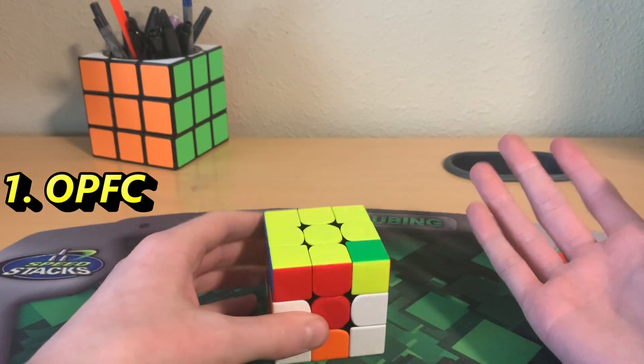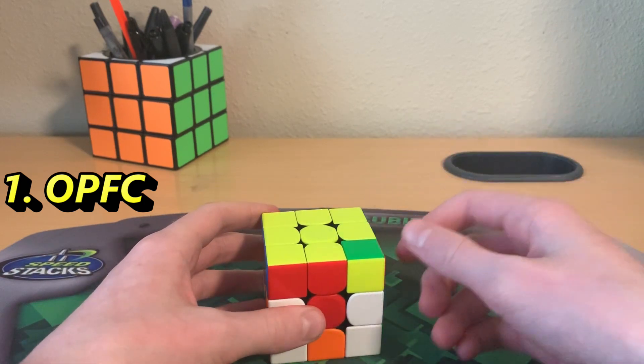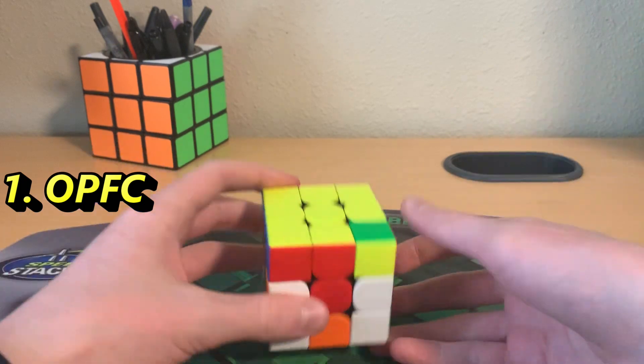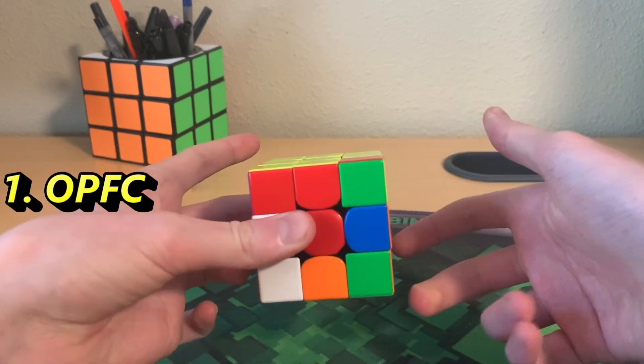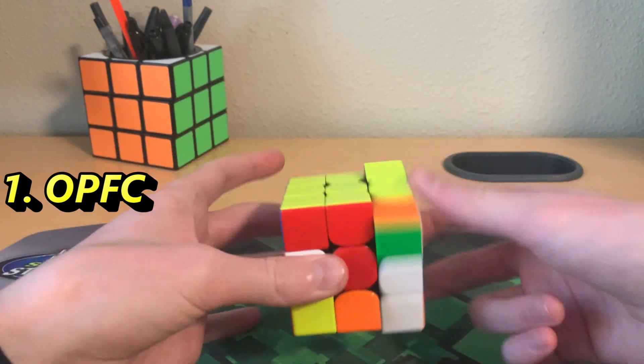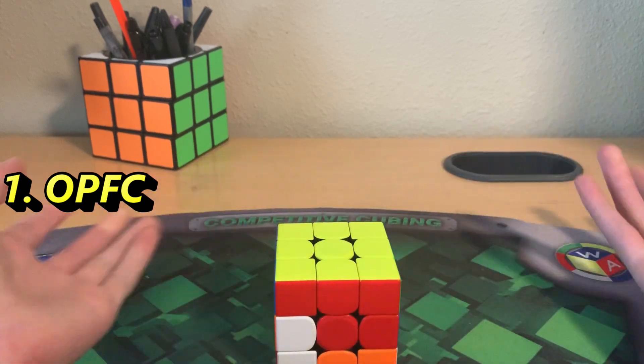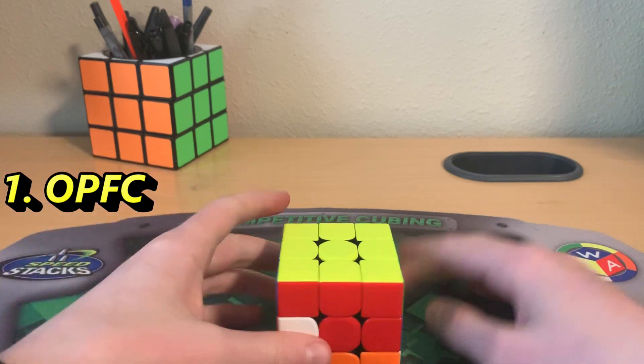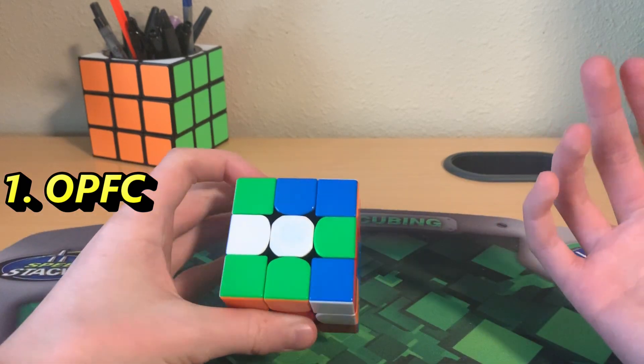One thing I didn't get in that example solve was corner parity. So if your corner is like unsolvable corner case, then just go like that until you get a solvable corner case. So we start with OLL then PLL, but how the heck are we going to do the F2L?